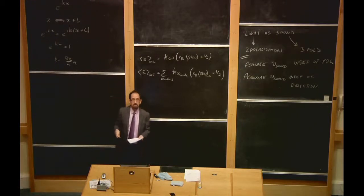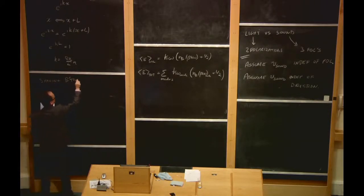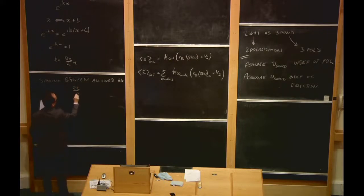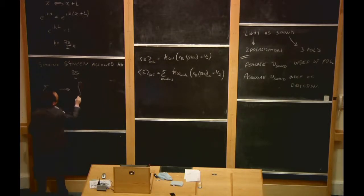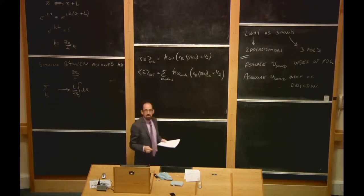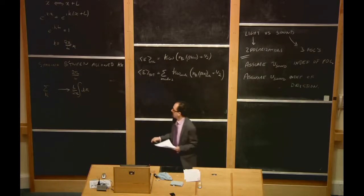This means the spacing between allowed k values is 2π/L. If we ever have to sum over all k's, we can replace that sum with an integral dk times a factor of L/(2π). We're going to use this an awful lot this year, so it's worth going through carefully.